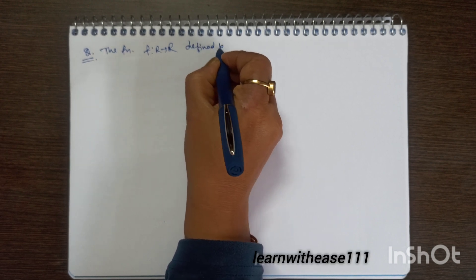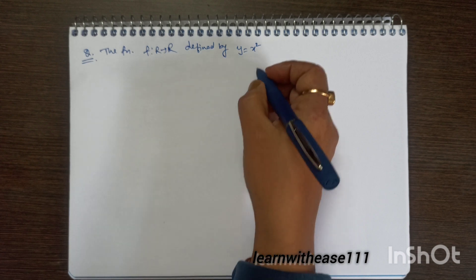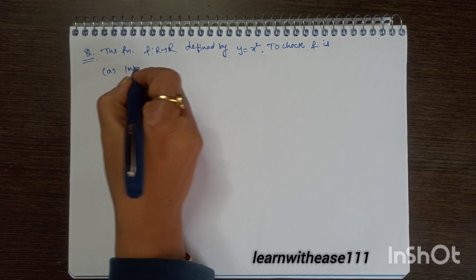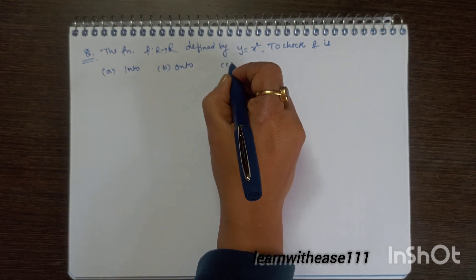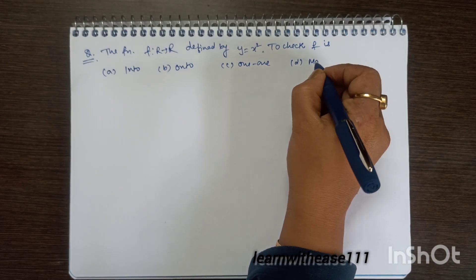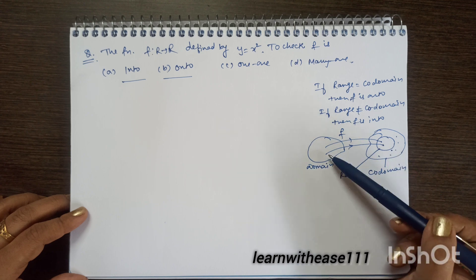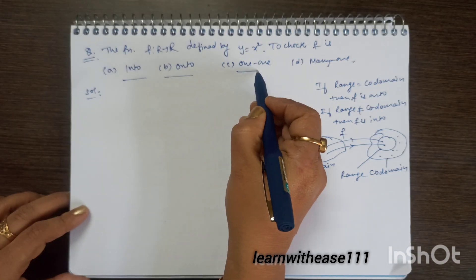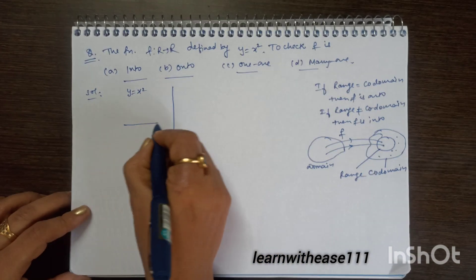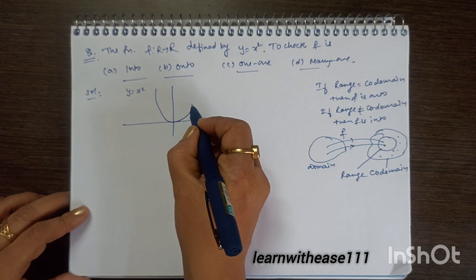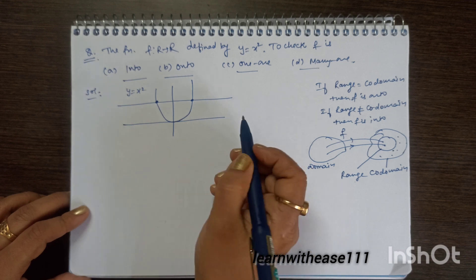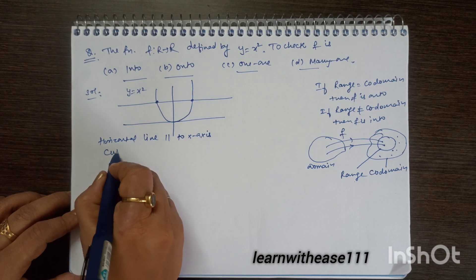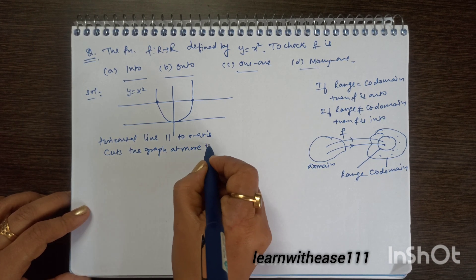Next, the function f defined from R to R by y = x² — we need to check whether it is into/onto and one-one/many-one. y = x² is an upward parabola passing through the origin. When we draw a horizontal line parallel to the x-axis, it cuts the graph at more than one place, so the function is many-one.